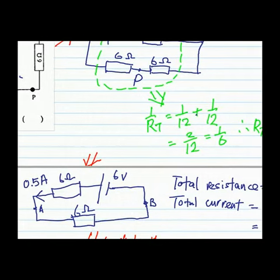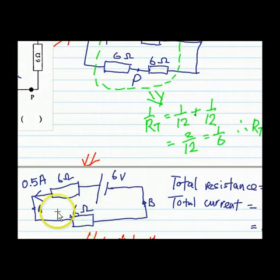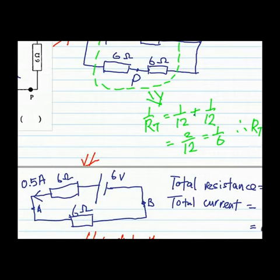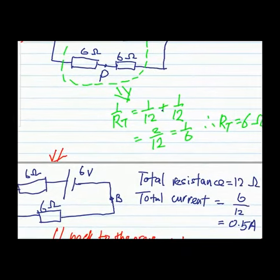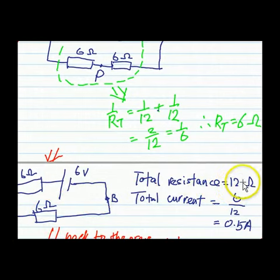The total resistance in the circuit is 6 plus 6 ohms, which totals 12 ohms. By working it out, the total current is equal to the total EMF divided by the total resistance.